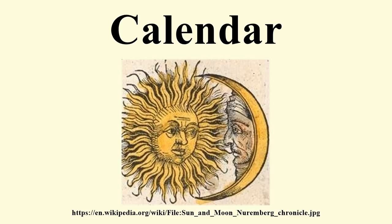Lunar calendars are synchronized to the motion of the moon; an example is the Islamic calendar. Solar calendars are based on perceived seasonal changes synchronized to the apparent motion of the sun; an example is the Persian calendar. Lunisolar calendars are based on a combination of both solar and lunar reckonings. There are some calendars that appear to be synchronized to the motion of Venus, such as some of the ancient Egyptian calendars. Synchronization to Venus appears to occur primarily in civilizations near the equator. The week cycle is an example of one that is not synchronized to any external phenomenon.